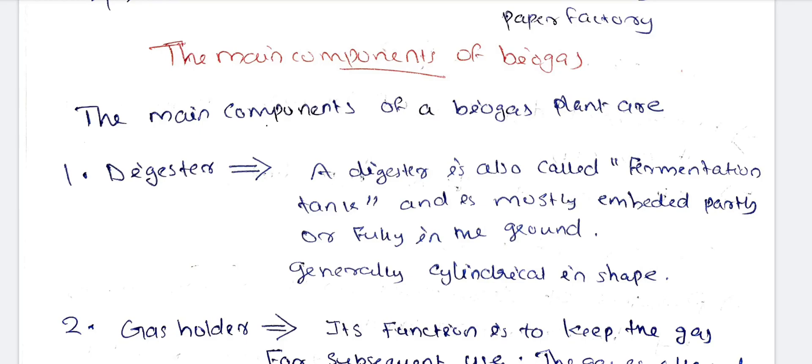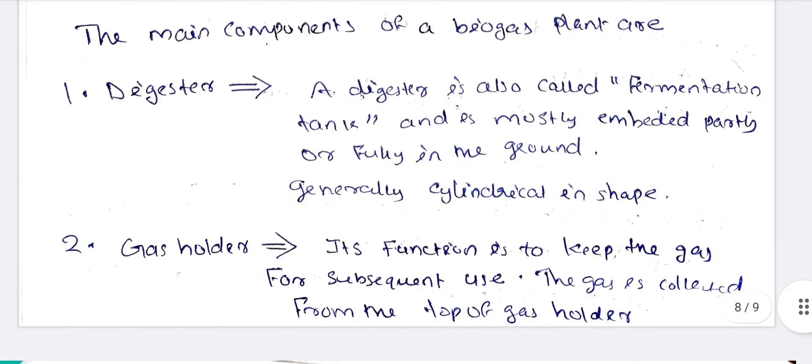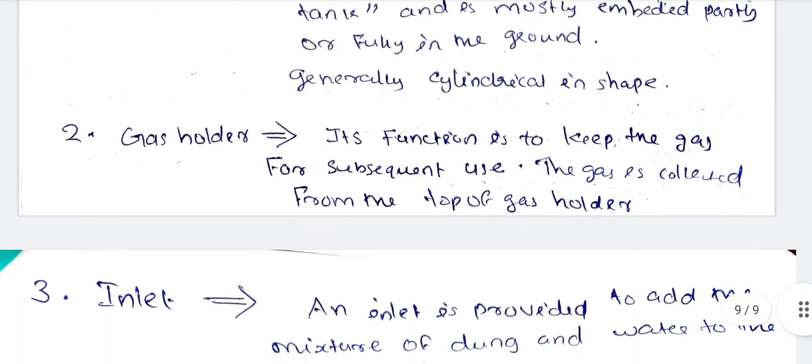The main components of biogas plants: the digester is really a tank, also called a fermentation tank, mostly embedded partly or fully in the ground, generally cylindrical in shape. Next, the gas holder — its function is to keep the gas for subsequent use, storing the gas in the biogas plant.